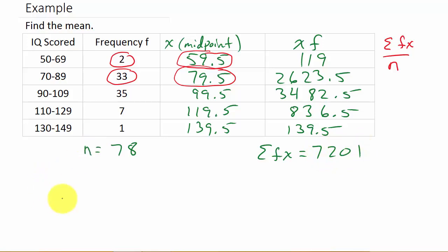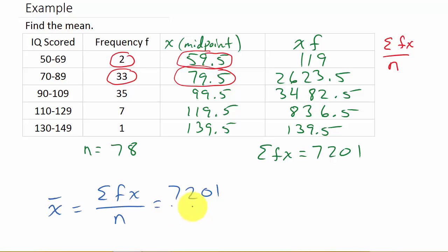Now the sample mean is the sum of f times x over n, which is 7,201 over 78. Rounding to two decimal places, we get 92.32 — the full decimal is 92.32051282. And that's how you find the mean of a frequency distribution.